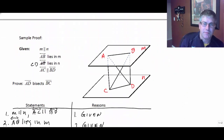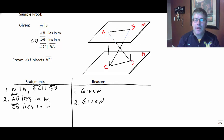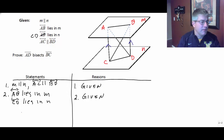Let's take a look at our sample proof — it's going to be a little more challenging. Our givens say that plane M is parallel to plane N, AB lies in plane M, CD lies in plane M, and AC is parallel to BD. We want to prove that AD bisects BC — so we want to prove these two diagonals bisect each other.